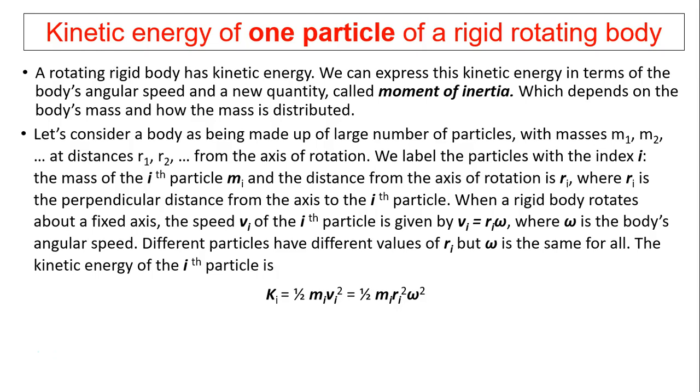Let's consider a body as being made up of a large number of particles with masses m1, m2, and so forth at distances r1, r2 from the axis of rotation. We label the particles with the index i. The mass of the i-th particle is mi, and the distance of that particle from the axis is ri. Ri is the perpendicular distance from the axis to the i-th particle.